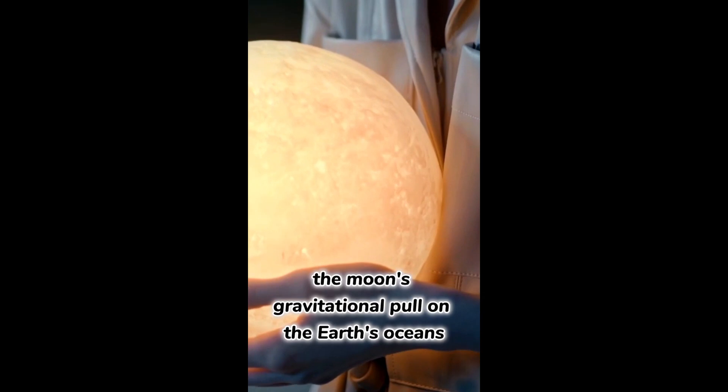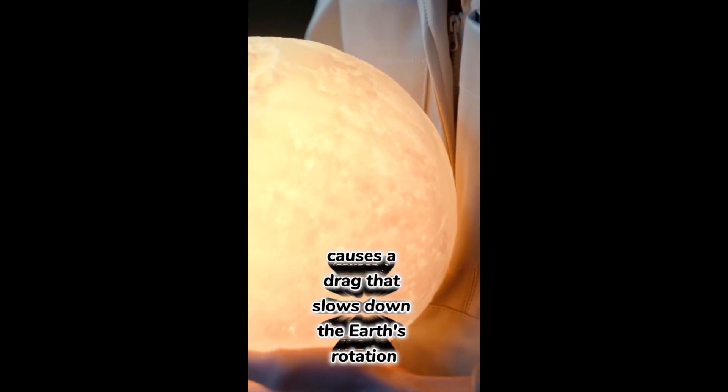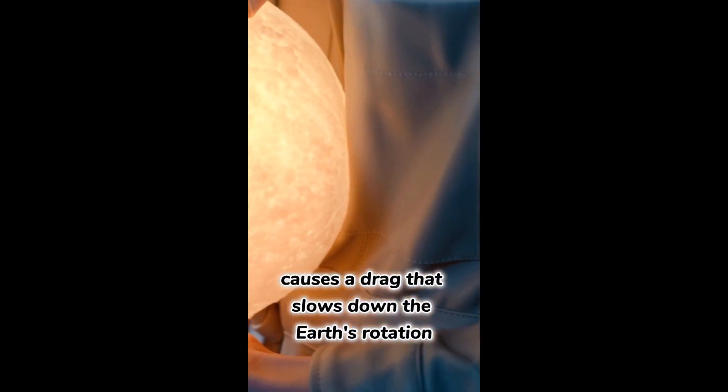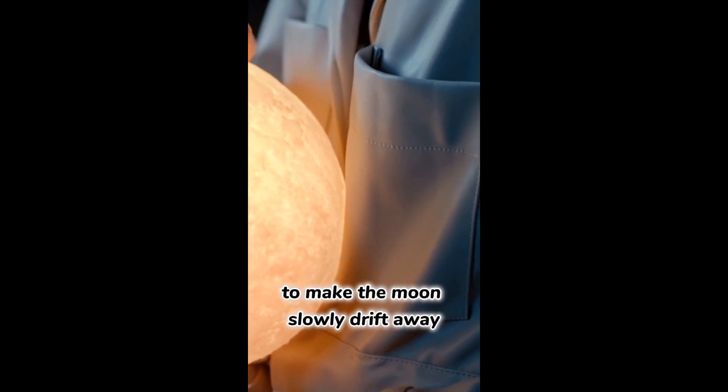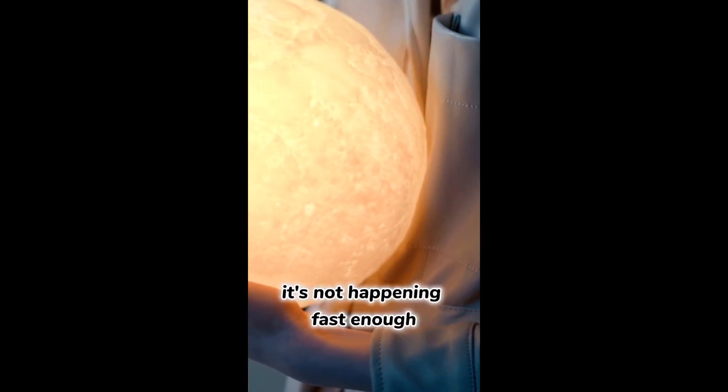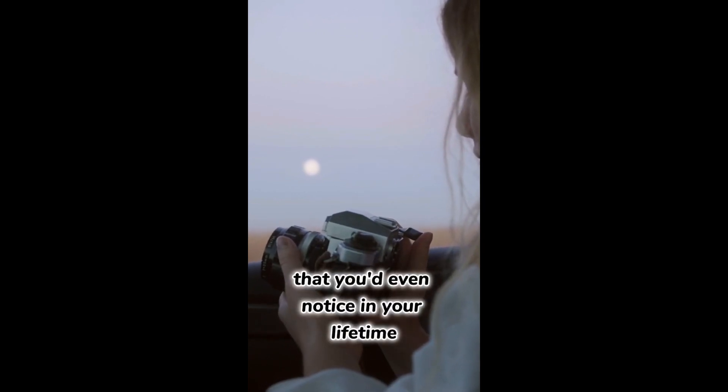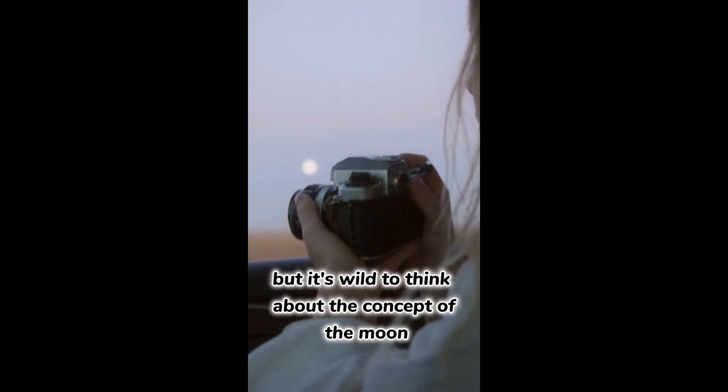The moon's gravitational pull on the Earth's oceans causes a drag that slows down the Earth's rotation, and in turn, gives enough of a push to make the moon slowly drift away. It's not happening fast enough that you'd even notice in your lifetime, but it's wild to think about the concept of the moon slowly drifting away.